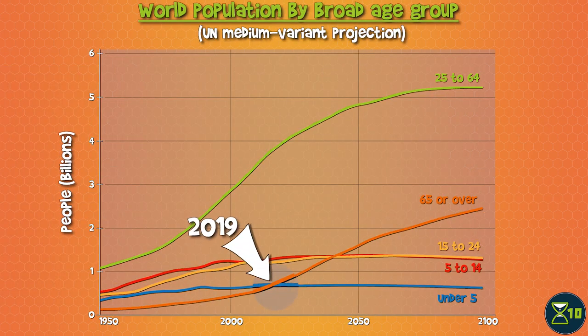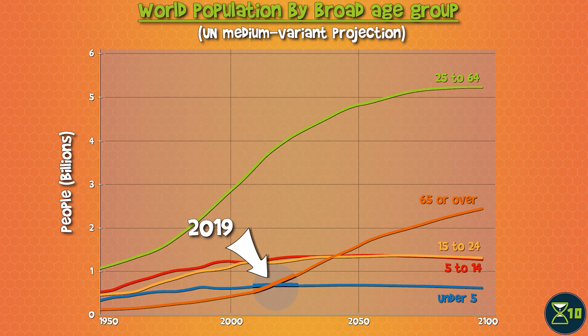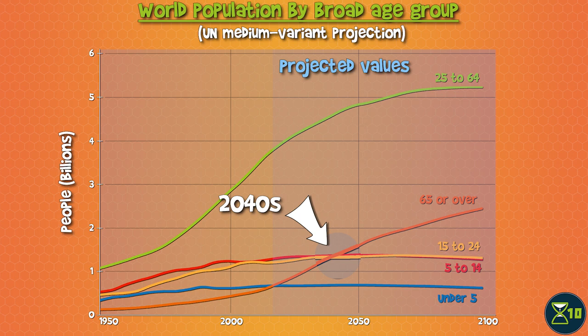In 2019, the over 65s overtook the under 5s, and they're projected to overtake both the 5 to 14 and 15 to 24 brackets by the late 2040s, making them the fastest-growing age group.